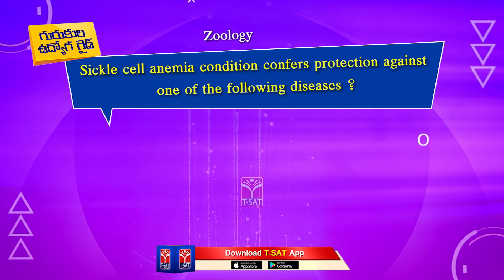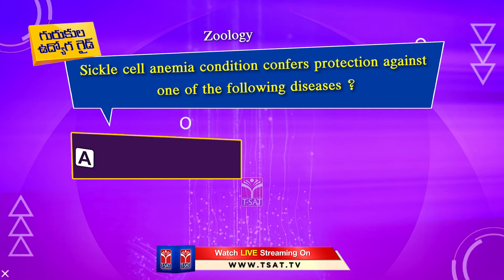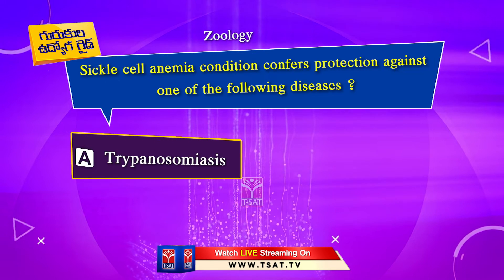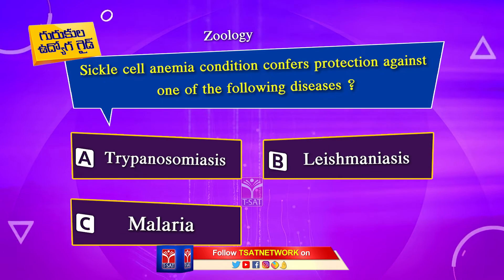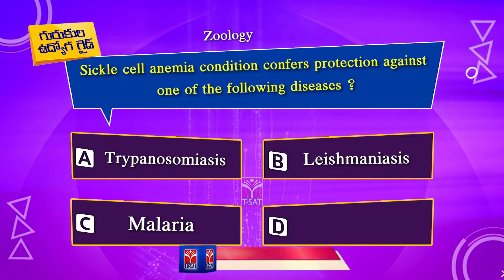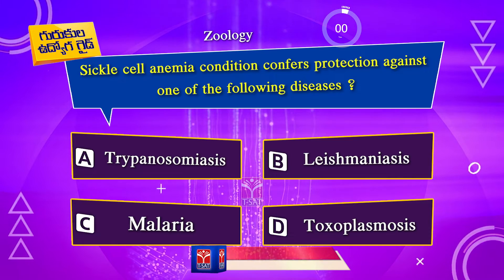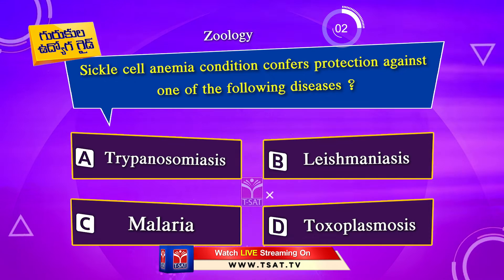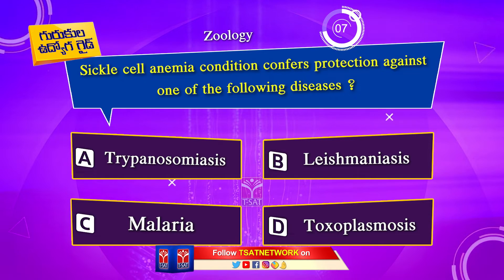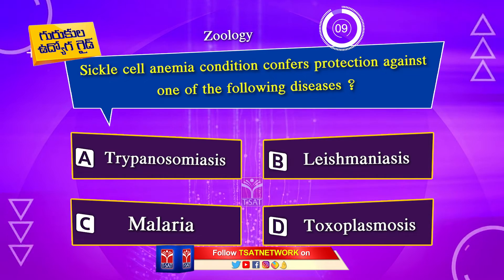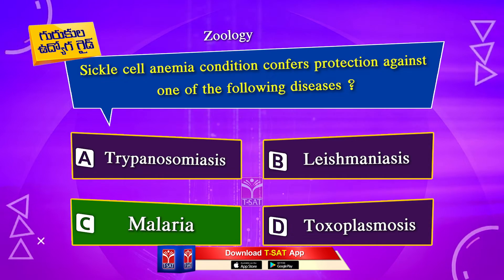Next question. Sickle cell anemia condition confers protection against one of the following diseases: Option A. Trypanosomiasis. Option B. Leishmaniasis. Option C. Malaria. Option D. Toxoplasmosis. The correct answer is Option C. Malaria.